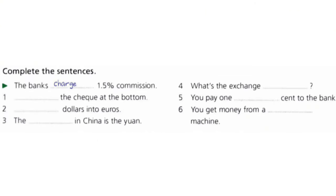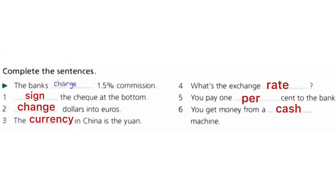We have another exercise. Number two: complete the sentences. We have six sentences — you need to fill the blanks with the vocabularies we learned. For example, the banks charge 1.5% commission. The answers: 1. Sign the check at the bottom. 2. Change dollars into euros. 3. The currency in China is the yuan. 4. What's the exchange rate? 5. You pay 1% in the bank. And the last one: you get money from a cash machine.